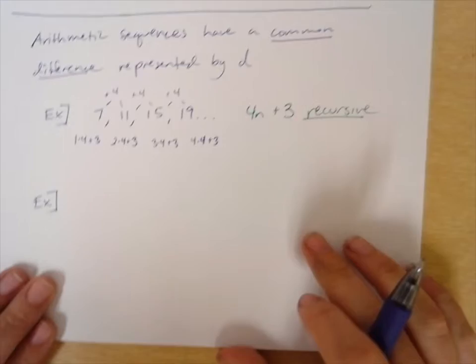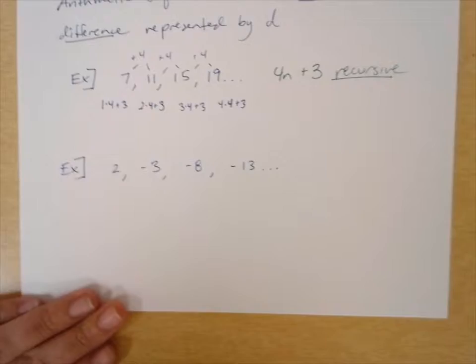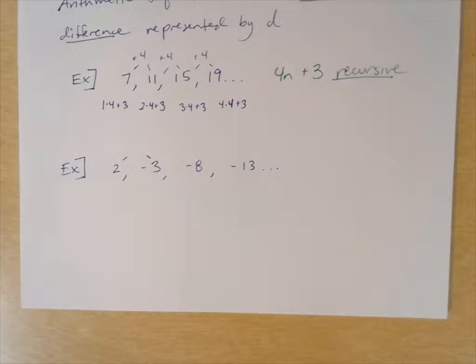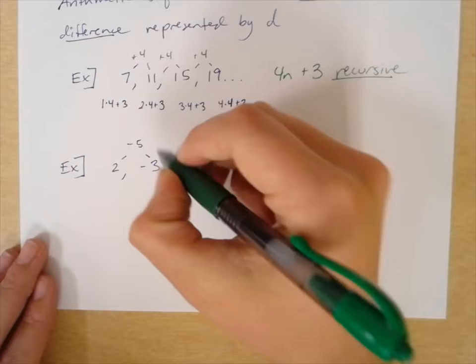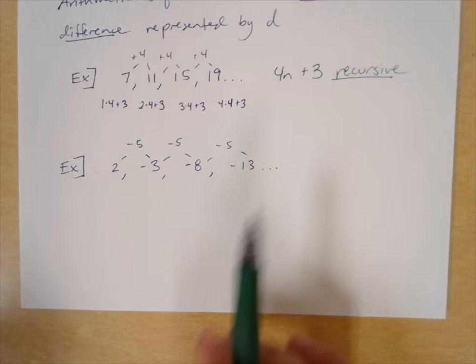Let's do another example. This is a sequence as well: 2, negative 3, negative 8, negative 13, and so on. The common difference here can be found: 2 minus 5 gives negative 3; negative 3 minus 5 gives negative 8; negative 8 minus 5 gives negative 13. So we can see the common difference is minus 5.